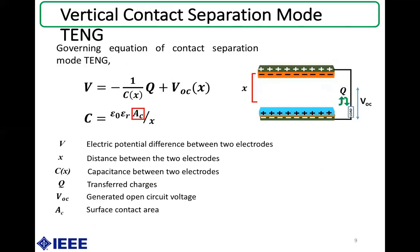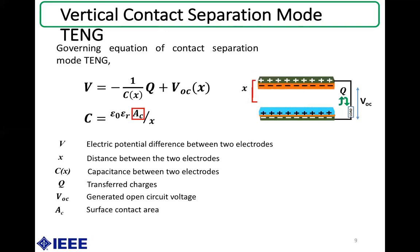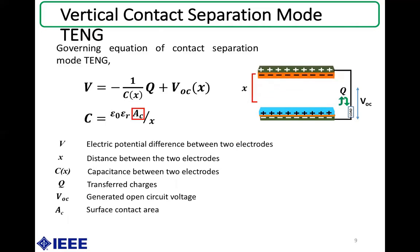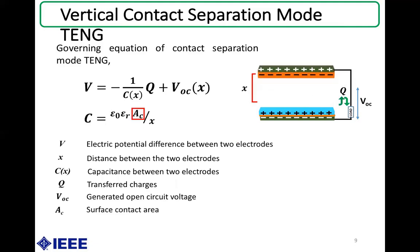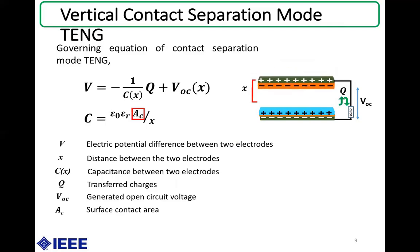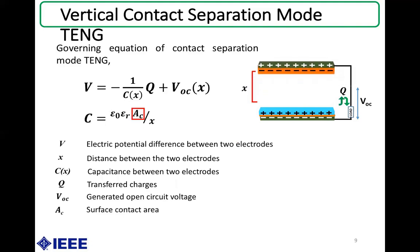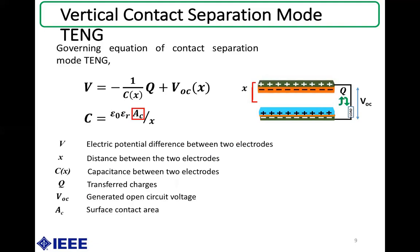This slide covers the equations of the vertical contact separation mode nanogenerator. The first equation gives the voltage difference between the two electrodes, where CX is the TENG capacitance varying with the gap distance between the two triboelectric layers. When the TENG device is mechanically excited, the capacitance CX is greatly affected. The term 1/CX in the first equation should be kept smaller to increase the voltage difference across the two electrodes, which can be done by increasing CX.